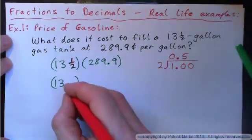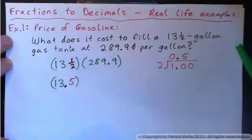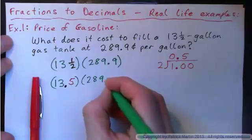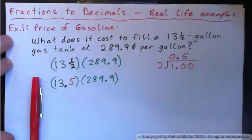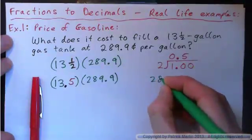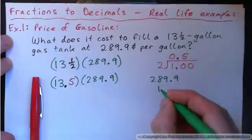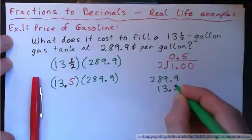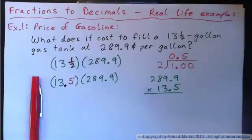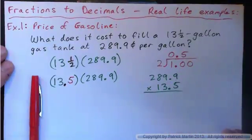Thirteen and a half is thirteen point five, isn't it? So it's thirteen point five times 289.9. We'll go ahead and multiply those decimals. I'll put the big long string on the top: 289.9, and the 13.5 on the bottom. Go ahead and multiply that — press pause, multiply it, and then check your answer with me.